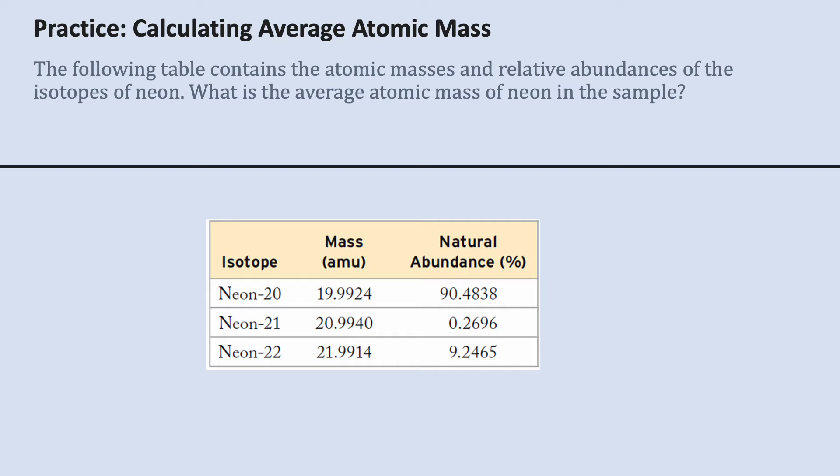This practice problem is about calculating the average atomic mass. We're going to do something that has three isotopes. Using the relative abundances and atomic masses of the following isotopes of neon, we're going to calculate the average atomic mass.